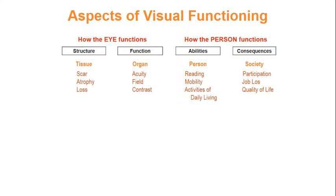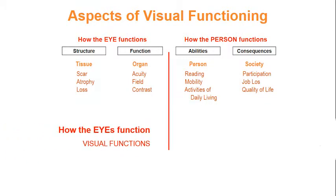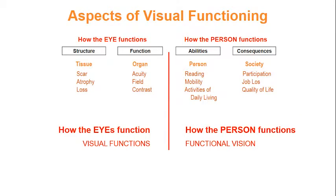I will use this schema in many of my slides. It is useful to draw a line in the middle. On the organ side, we describe how the eyes function and we speak of visual functions. On the person side, we describe how the person functions, especially in regard to vision-related activities of daily living, and we speak of functional vision.